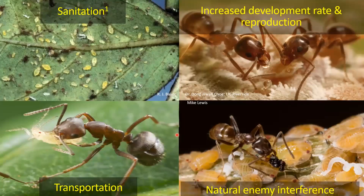As a recap: ants sanitize pest colonies by removing honeydew so there's not much sooty mold on leaves; they increase developmental rates and reproduction; they transport sap-suckers to new areas of the orchard; and in vineyards, they may even take vine mealybugs underground over winter to feed on roots, then bring them back up in spring. Most importantly, Argentine ants effectively interfere with natural enemies — you can see an Argentine ant eating the Asian citrus psyllid parasitoid Tamarixia radiata.